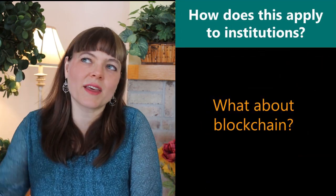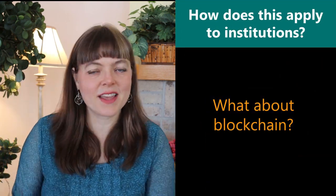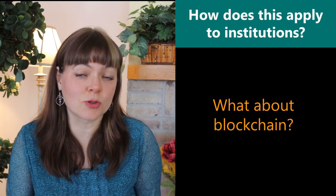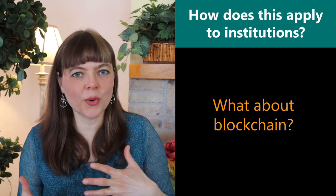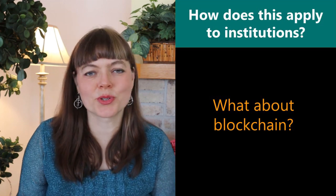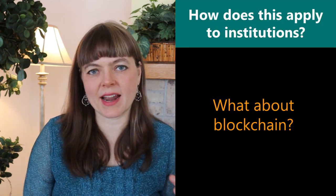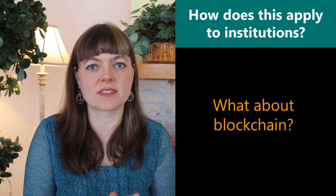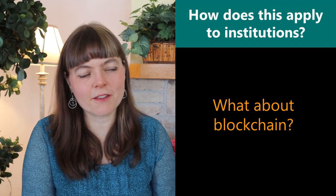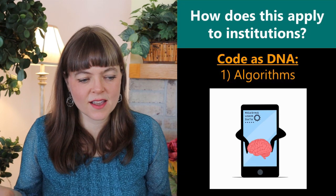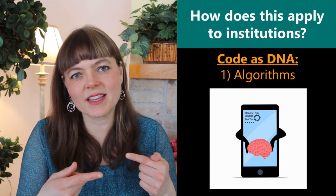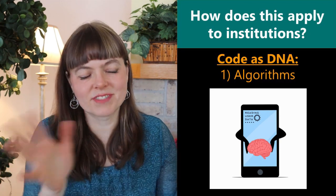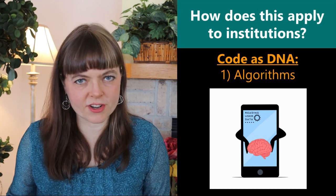Why do I think blockchain is so essential in this evolutionary environment to actually strengthening the way institutions evolve? If we're thinking about code as DNA in this institutional environment, there are going to be three big categories of things that you could put on a blockchain — things that you could code into these institutions that will be important. The first is going to be algorithms. Algorithms are what determines your news feed in a social media company's space.